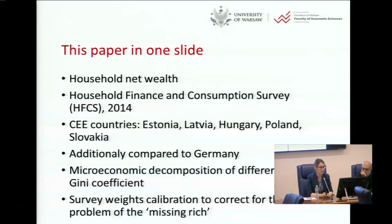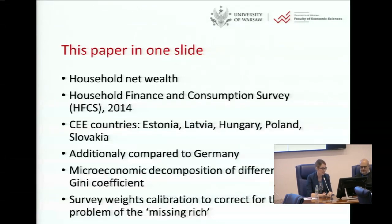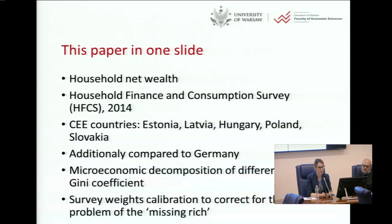The countries we focus on in this study are Estonia, Latvia, Hungary, Poland, and Slovakia. Additionally, we compare our results to an example of a highly developed country, Germany. What we do is a microeconomic decomposition of differences in the Gini coefficient, but for wealth, not for income like in the previous paper. Our methodological contribution is that we also perform survey weight calibration to correct for the problem of the missing rich.